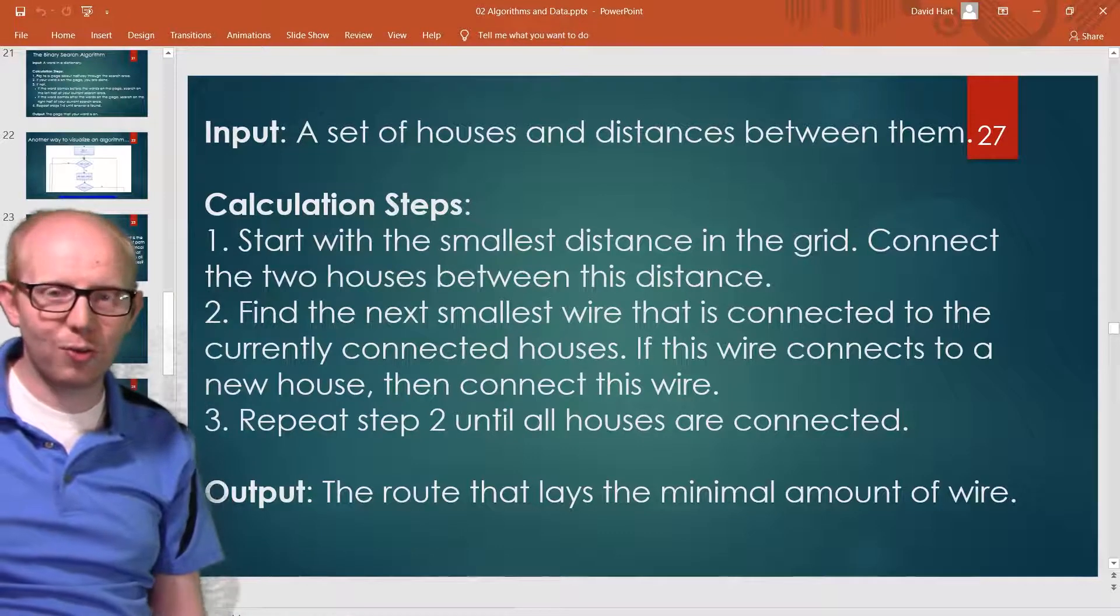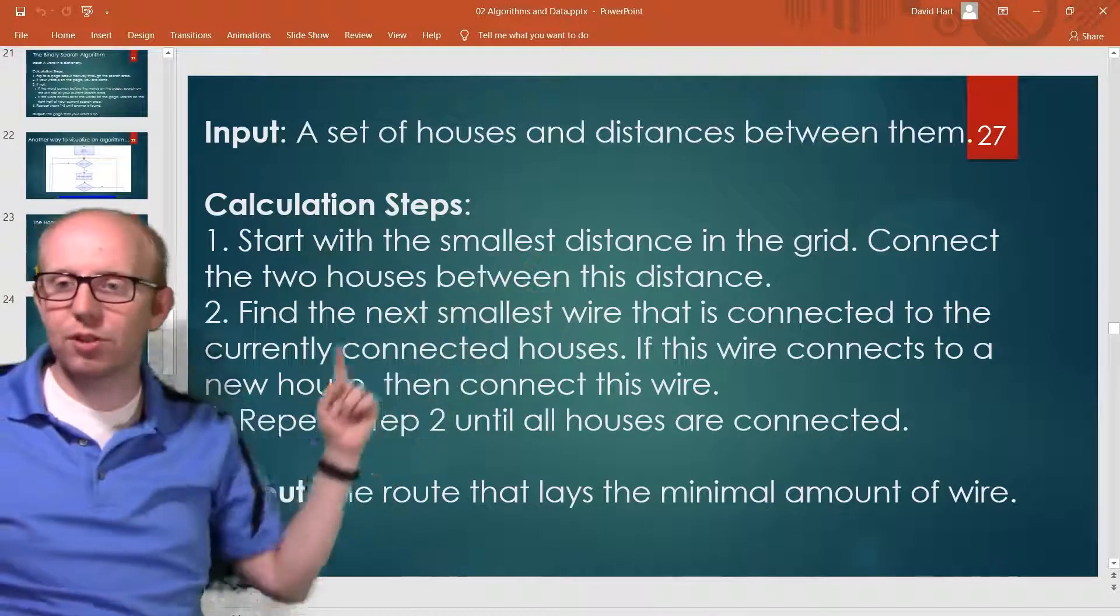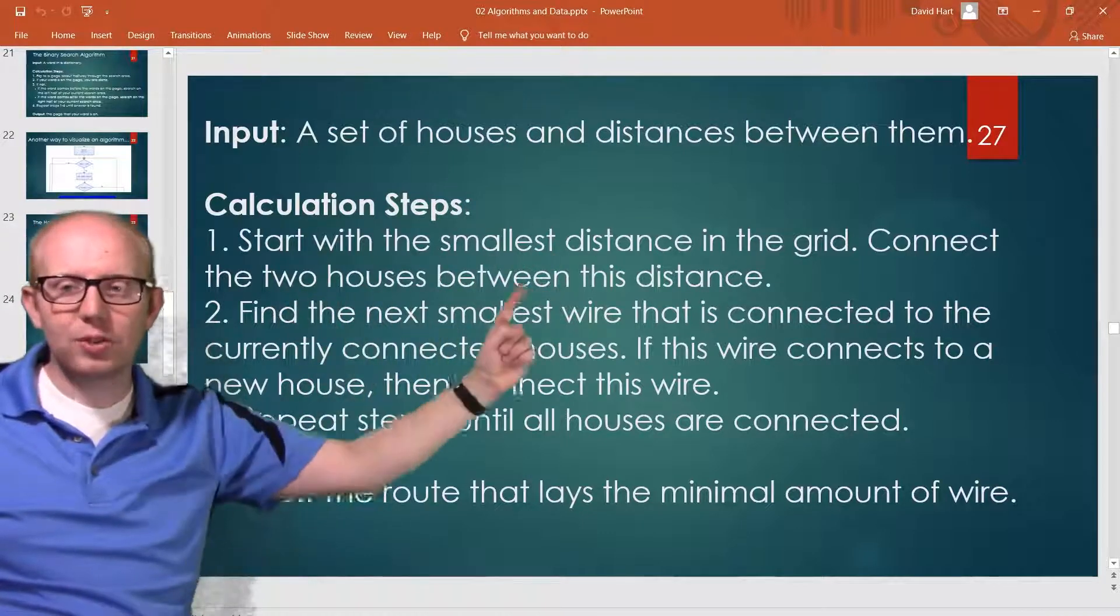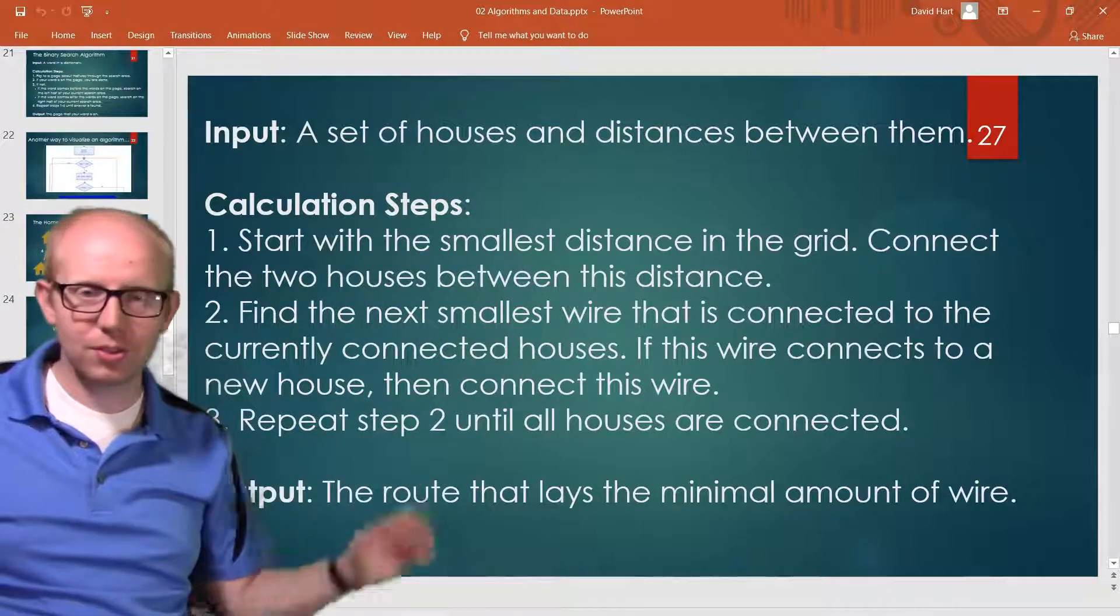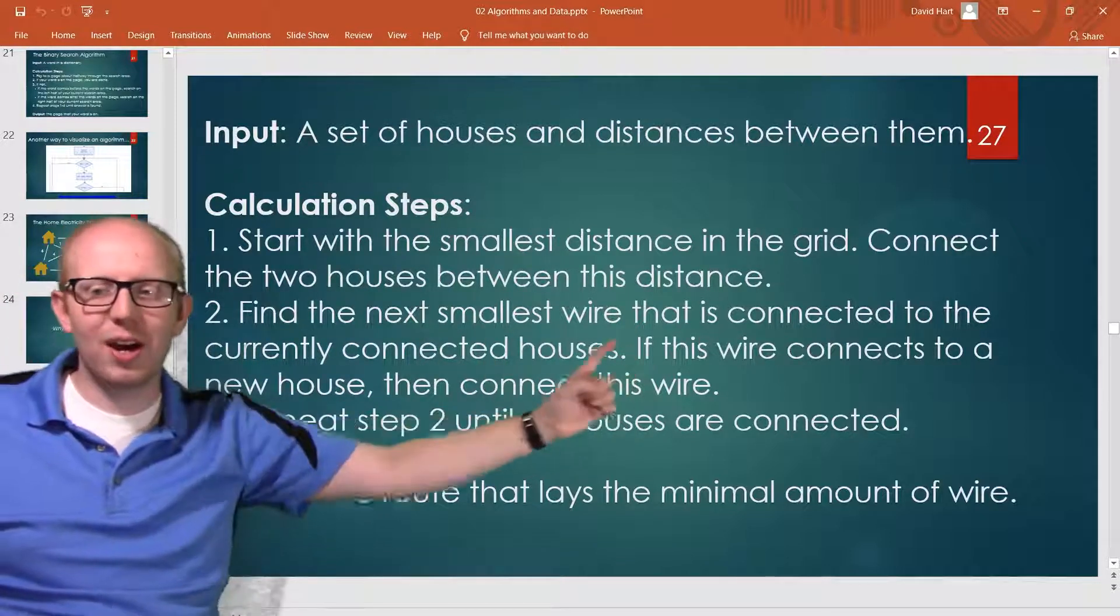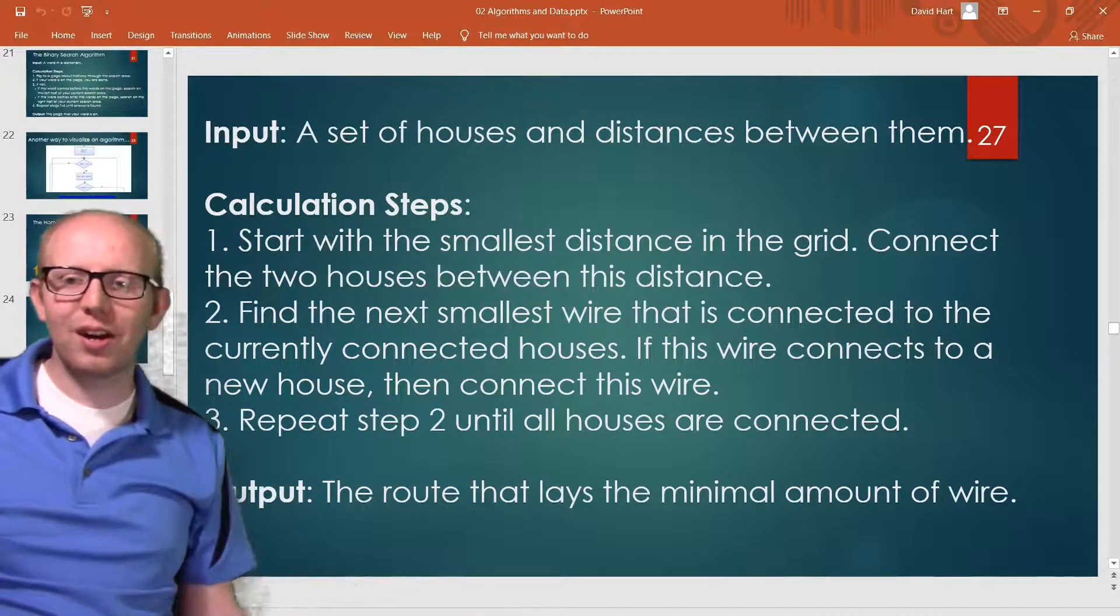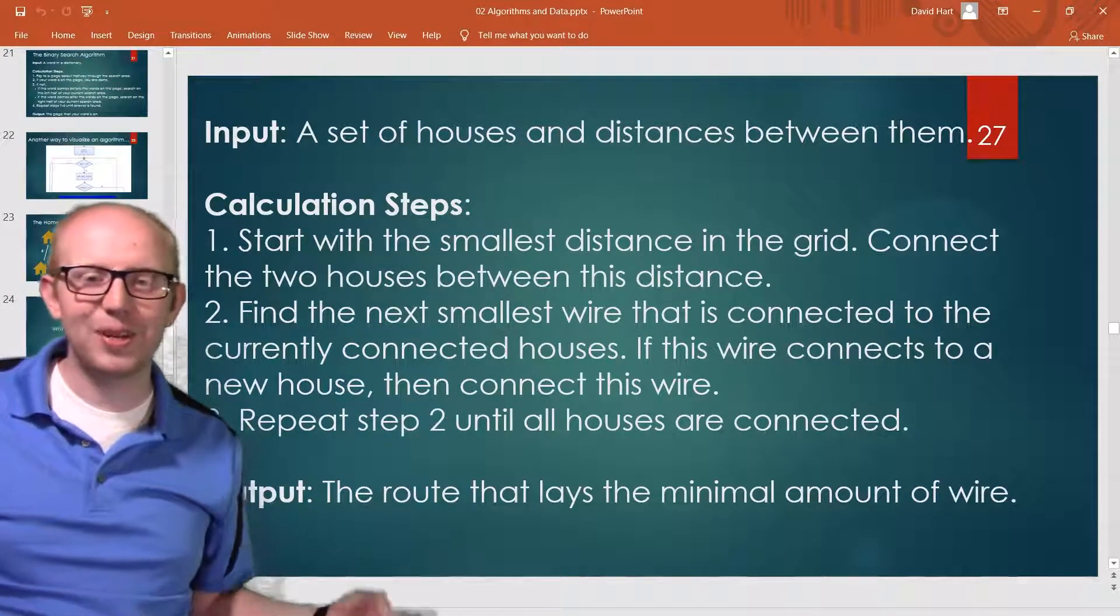Our input again is the set of houses and the distance between them. The output is the route that lays the minimal route of wire. And here are the official steps: so start with the smallest distance in the grid, connect two houses between this distance. Find the next smallest wire that is connected to the currently connected houses. If this wire connects to a new house then connect this wire.